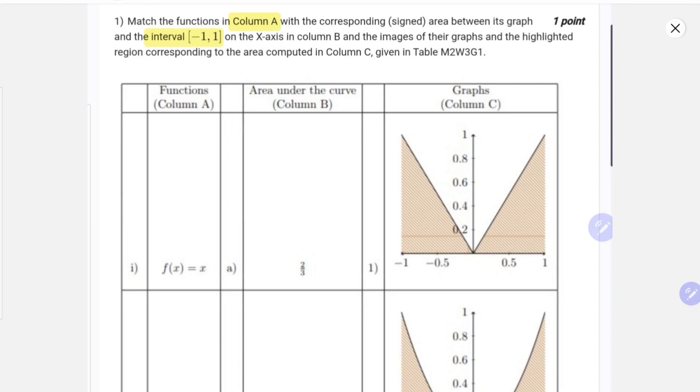So we have to match these and we have three things: function, area under the curve from minus 1 to 1, and the graph with the area shaded that we have calculated. So we can directly find it out.